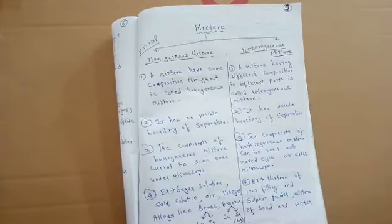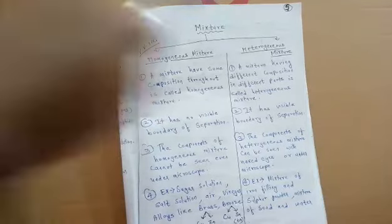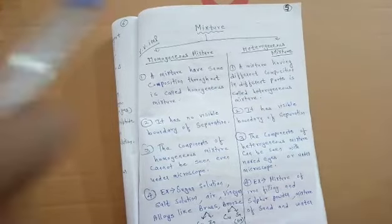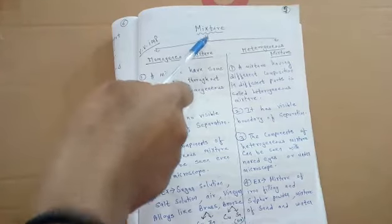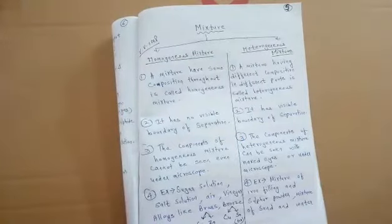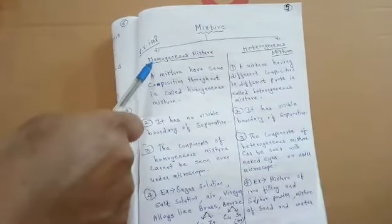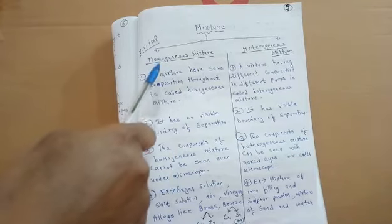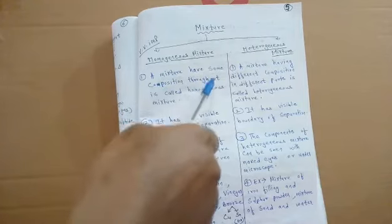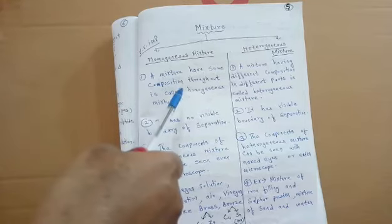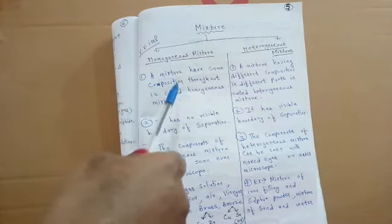This is page number 5. We will continue with mixtures. A mixture is of two types: homogeneous mixture and heterogeneous mixture. 'Homo' means same, 'genius' means composition. So a homogeneous mixture means a mixture having same composition throughout. An example is salt solution — when salt is completely dissolved in water, the composition becomes the same throughout.